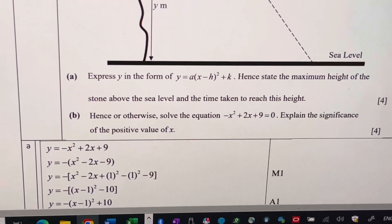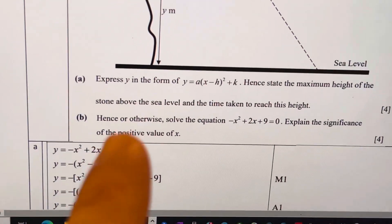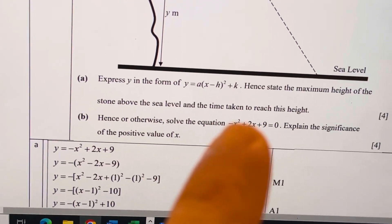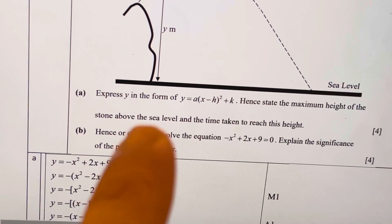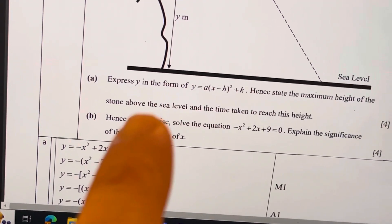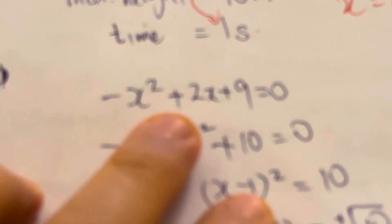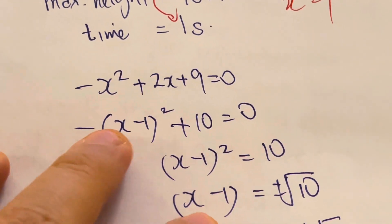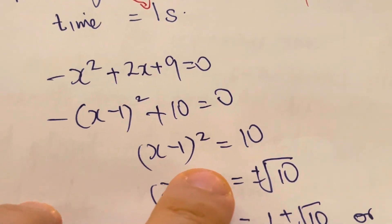Now, the second part asks you, hence or otherwise. Now, because there's an otherwise there, so you can use the quadratic formula to solve this. But if there is no otherwise, they just say hence, solve the equation. What does it mean? It means that you must use this method. You write the result of your part A here, and then you solve it. This is something, this is very E-max. So you get two answers.